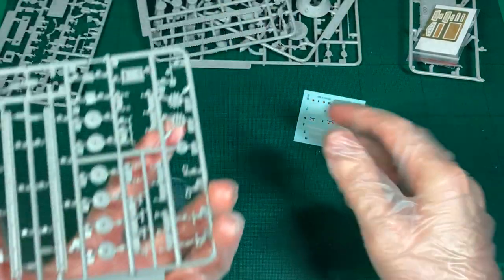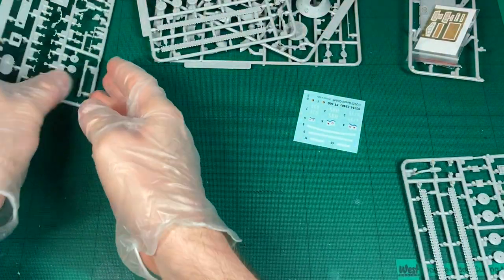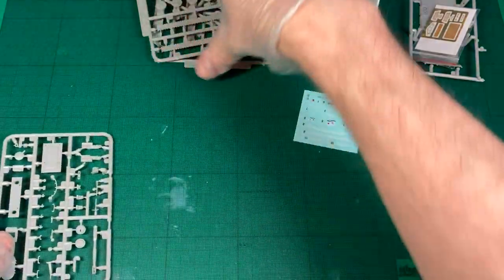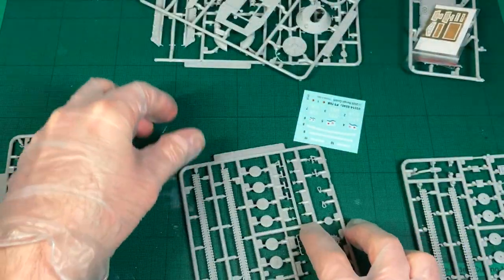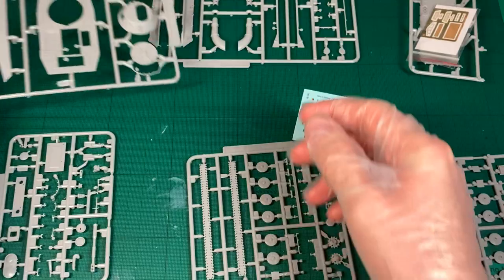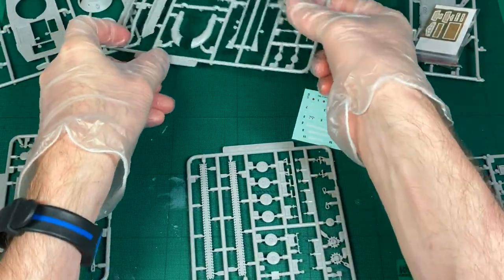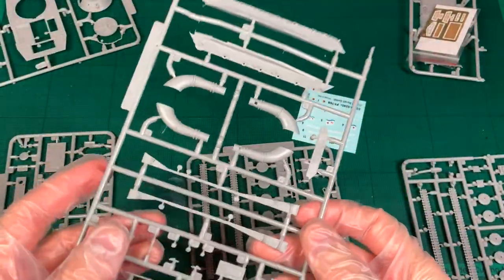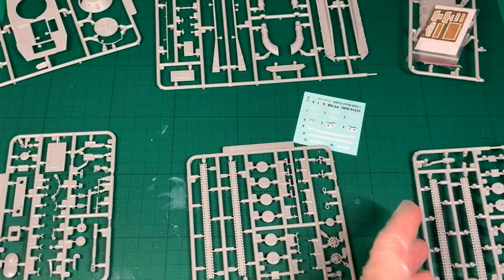Moving on to the sprues themselves. There are a lot of sprues. You've got pretty much one, two, three, four, five sprues, six in fact if you count the whole right there. And they are quite jam packed.